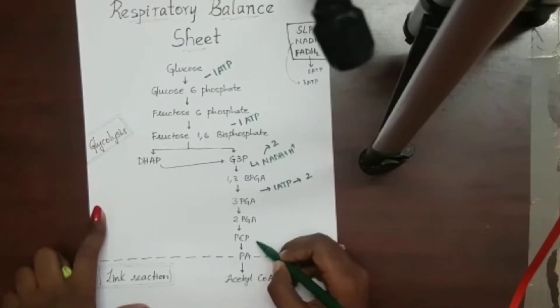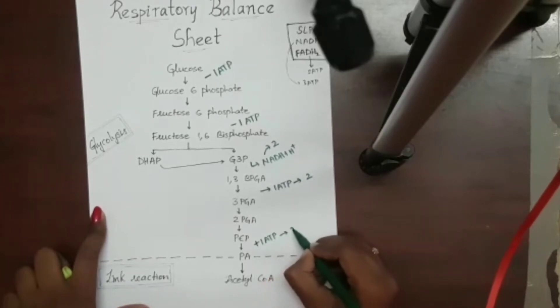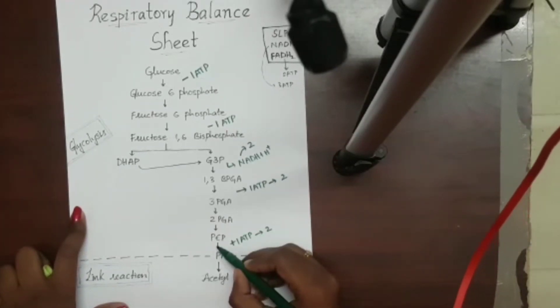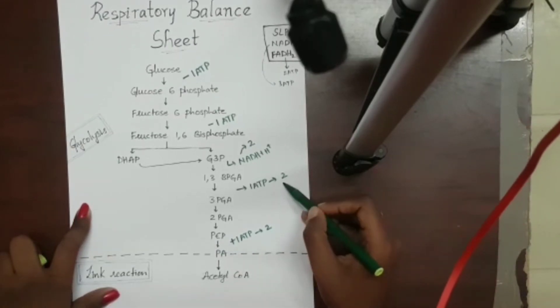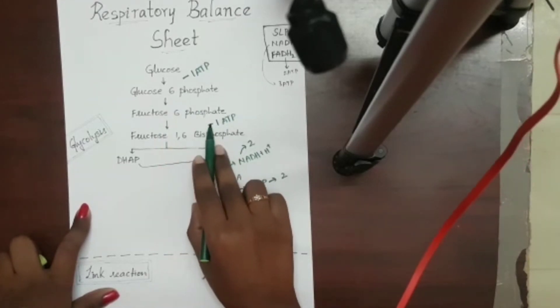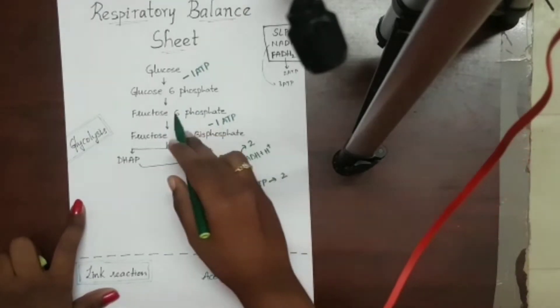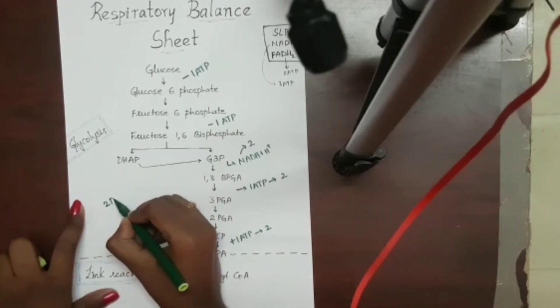From phosphoenol pyruvic acid to pyruvic acid, there is release of another ATP molecule. As there are two phosphoenol pyruvic acids, 2 ATP are formed. In total, there are 4 ATP formed and 2 ATP are utilized. So the net gain would be 2 ATP molecules.